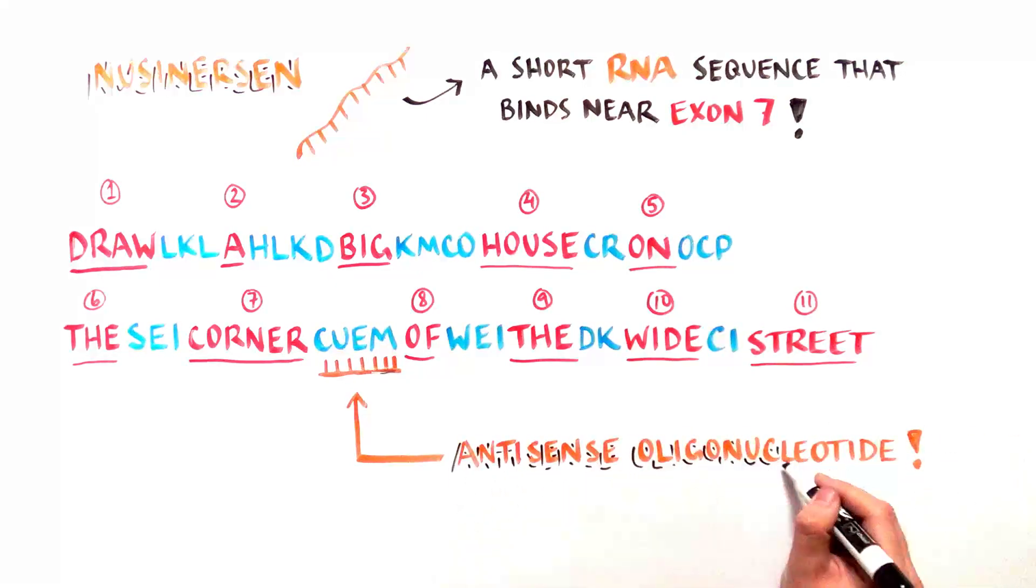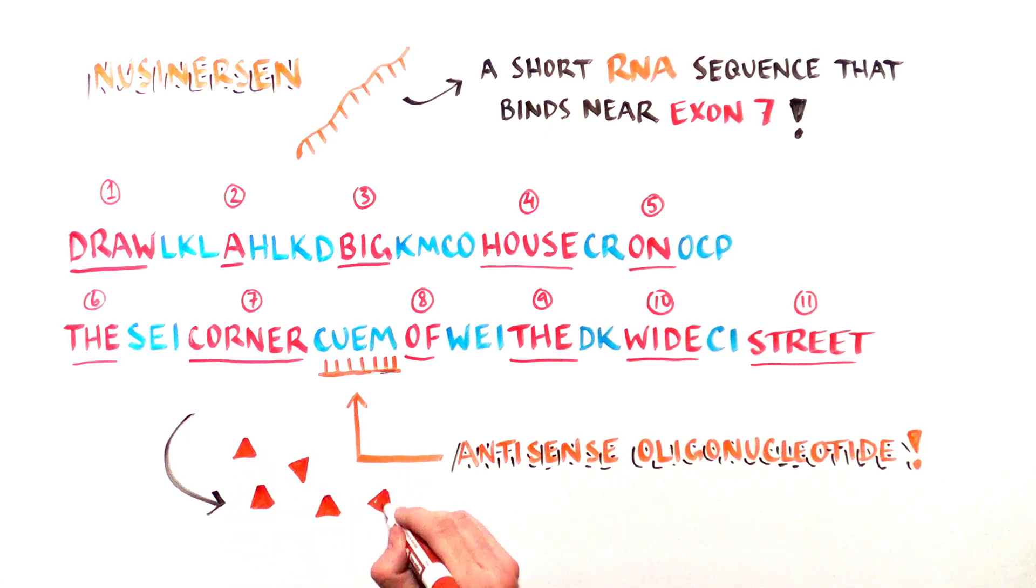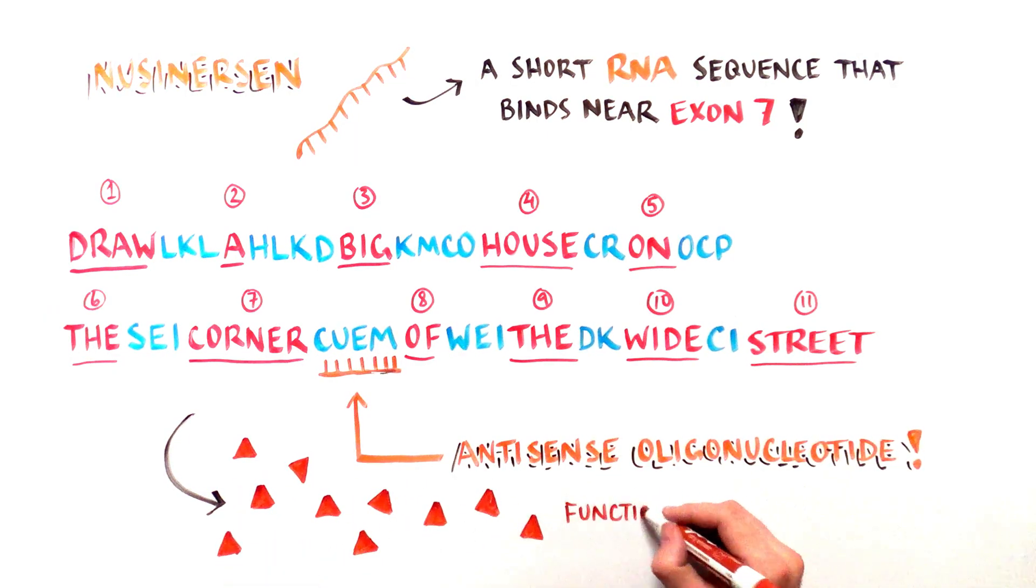Exon 7 is now included in the edited RNA message, which in turn generates full length functional SMN protein.